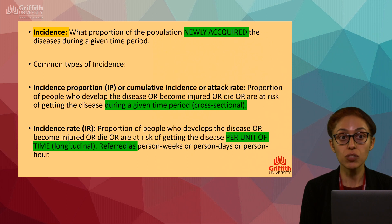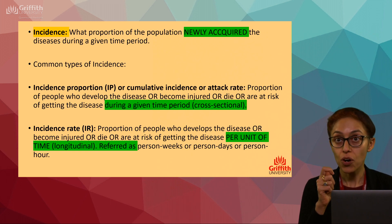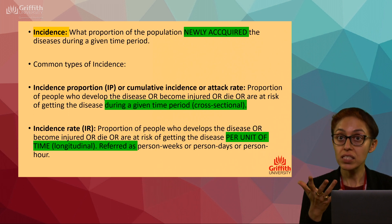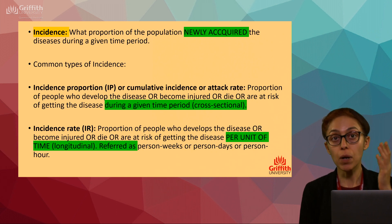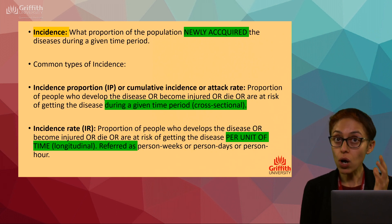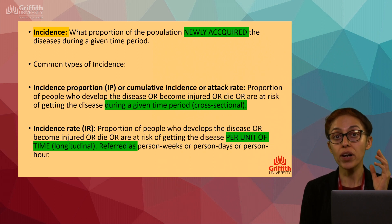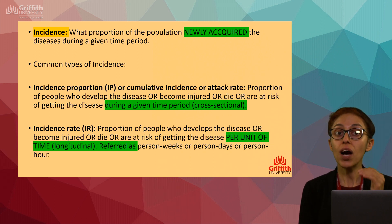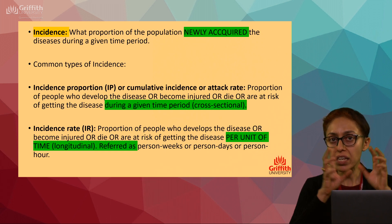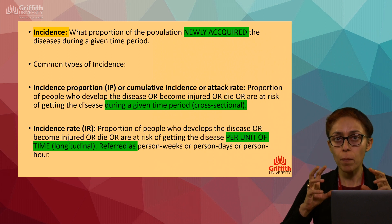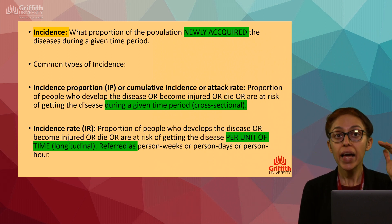For example, someone testing COVID-positive today — that is your incidence. There are two common types of incidence: incidence proportion (also called cumulative incidence or attack rate) and incidence rate. The main difference is that incidence proportion is cross-sectional, while incidence rate takes the unit of time into consideration.